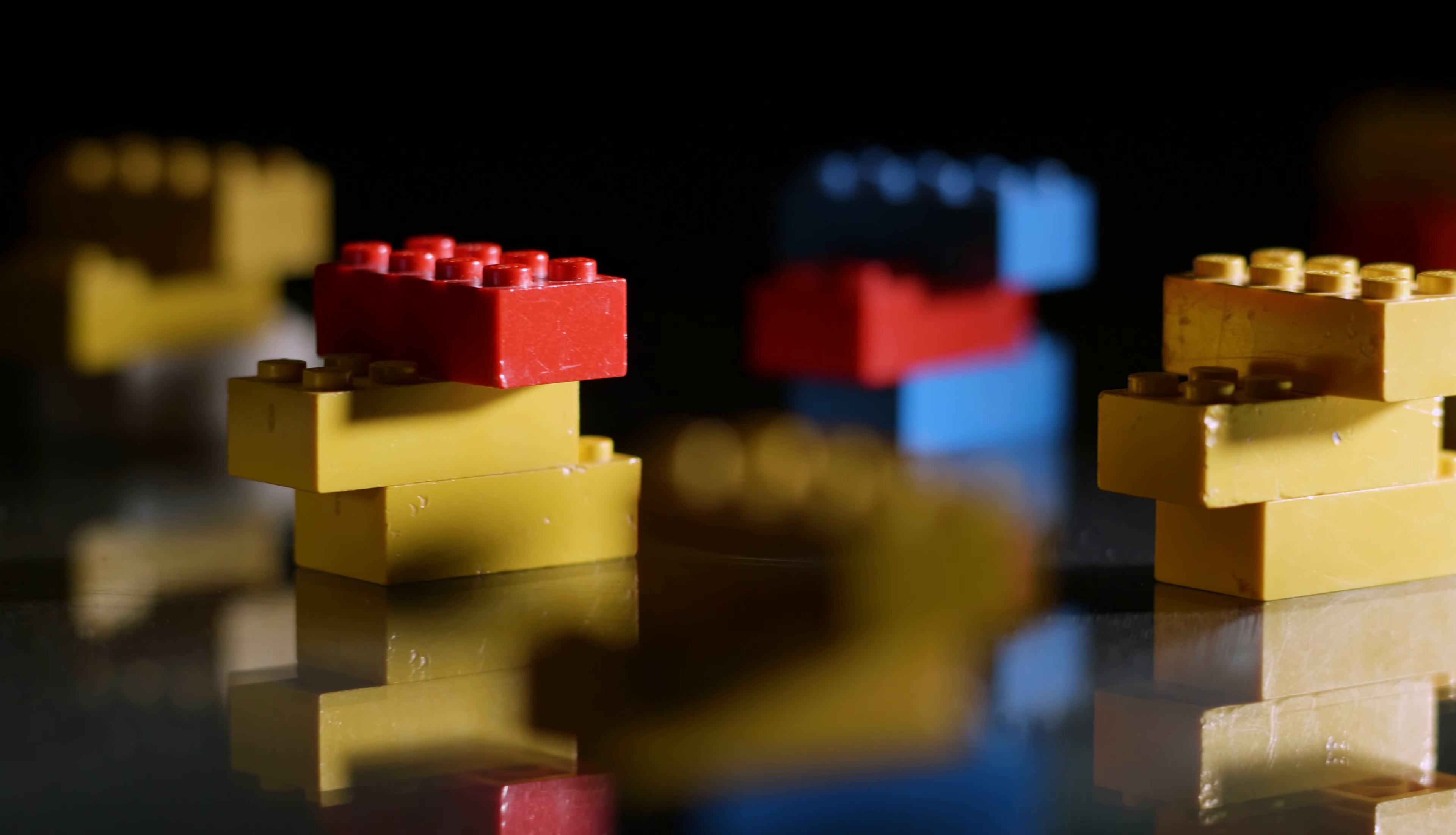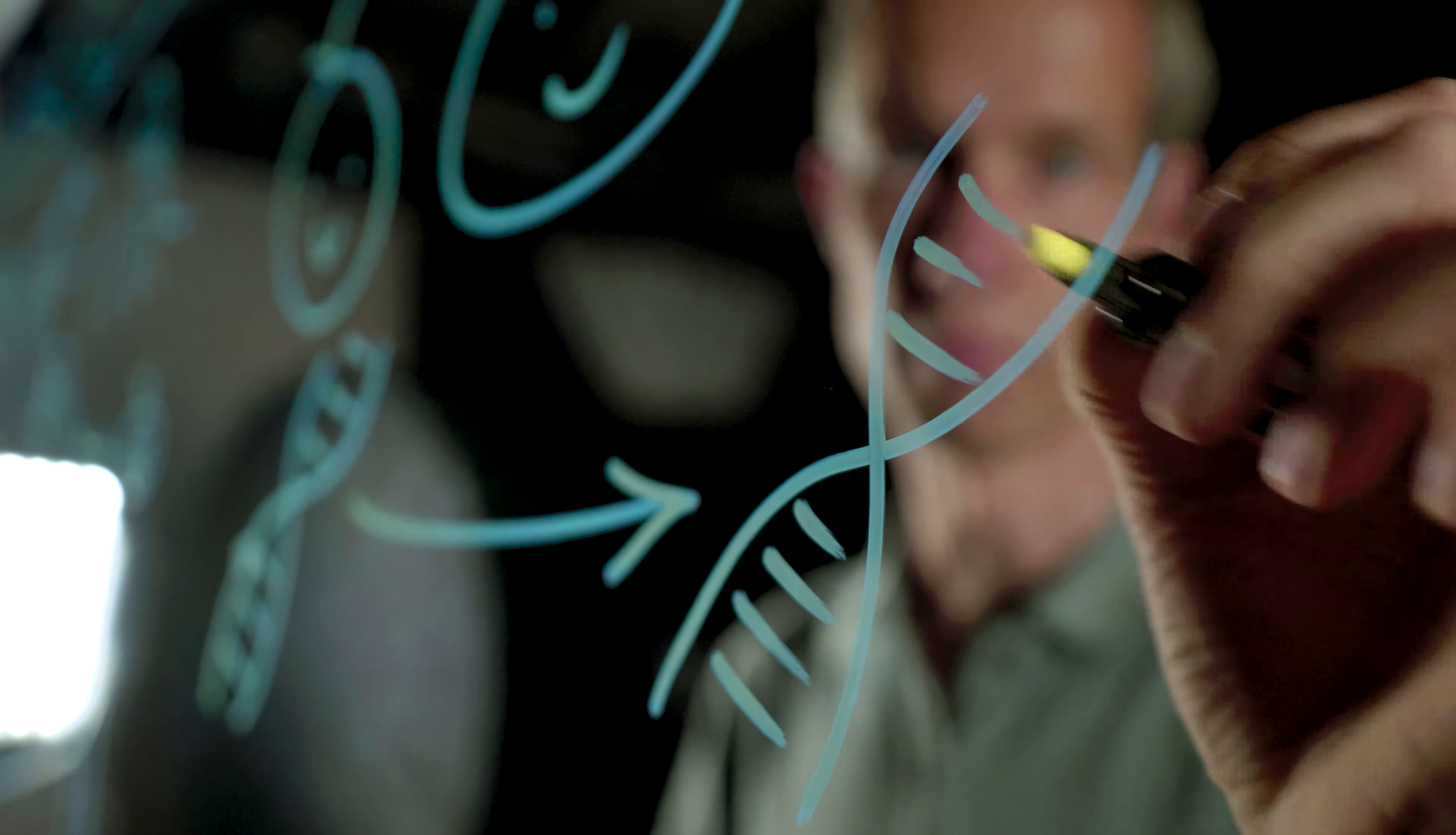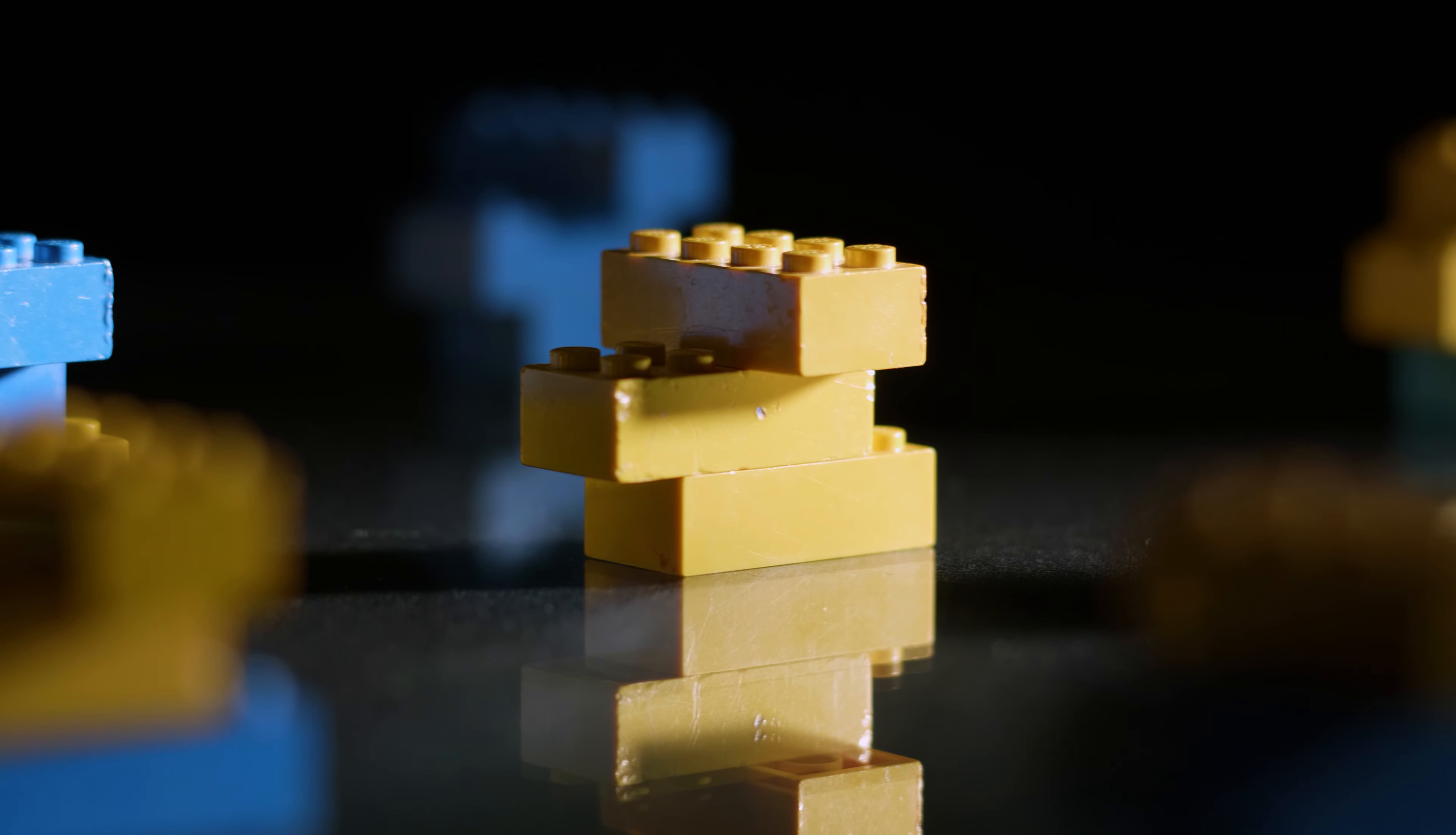Before I explain how I am studying this question, let's first think about how evolution works. In any population of organisms, there is variation. Part of this variation is caused by differences in the DNA, which means that these differences will be inherited by the offspring.